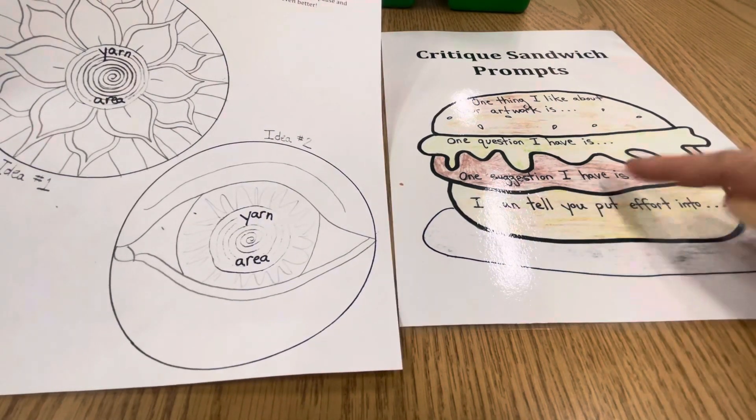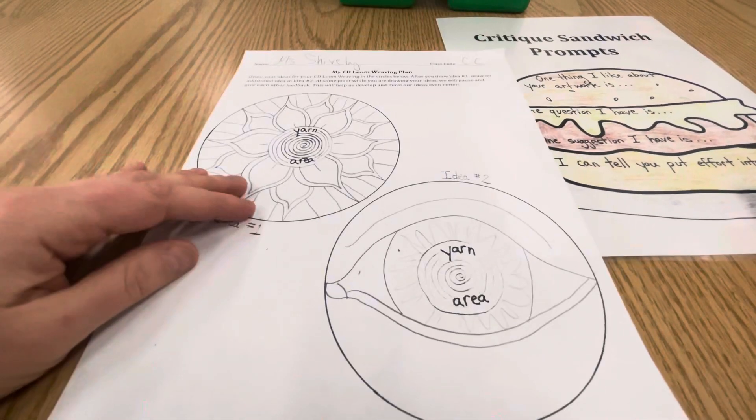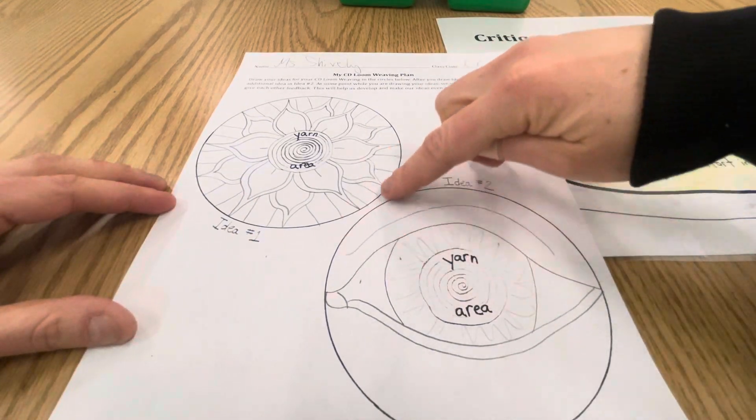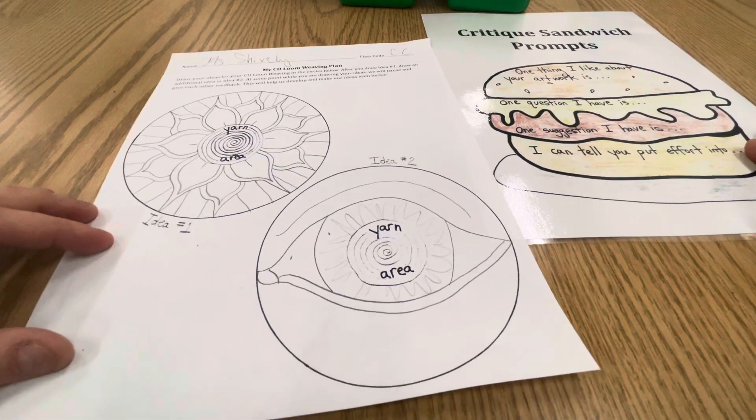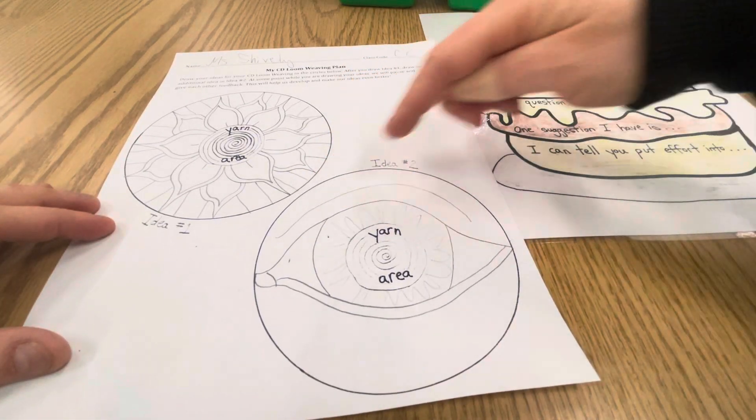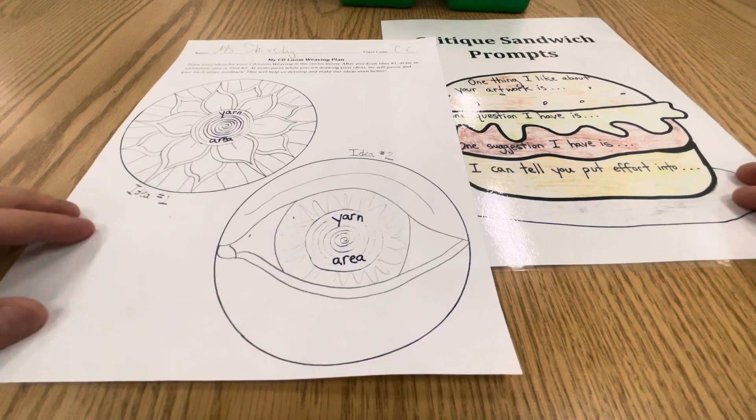Then it says one suggestion I have is. I could tell this artist, what if you added some eyelashes here? That might make this eye look complete, or maybe even an eyebrow in here. Just an idea, a suggestion that I have to improve their work.